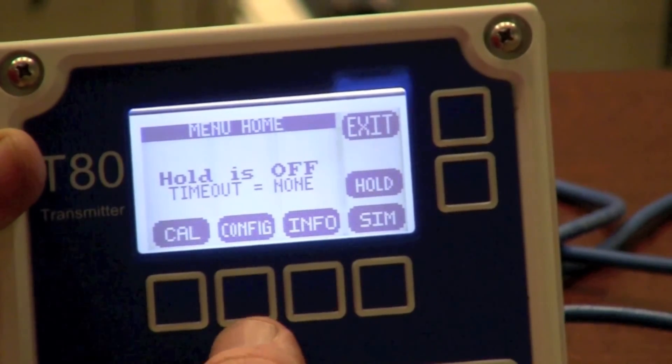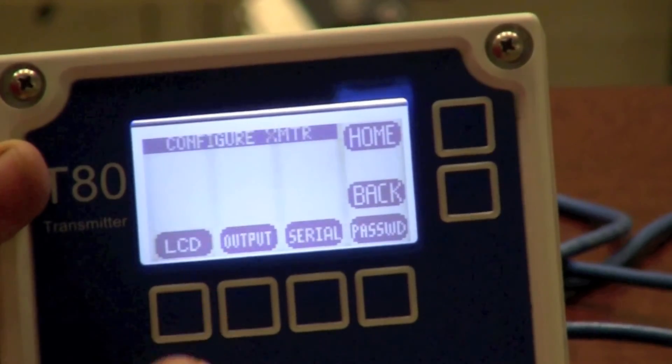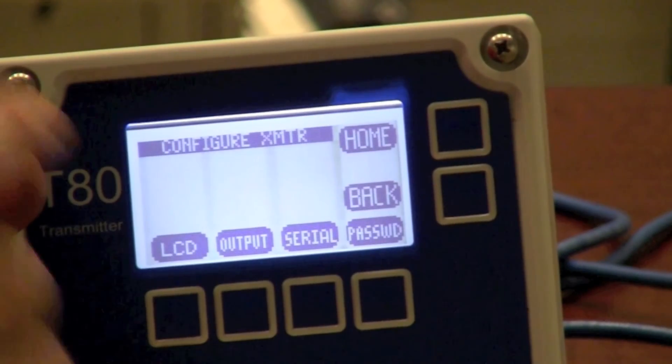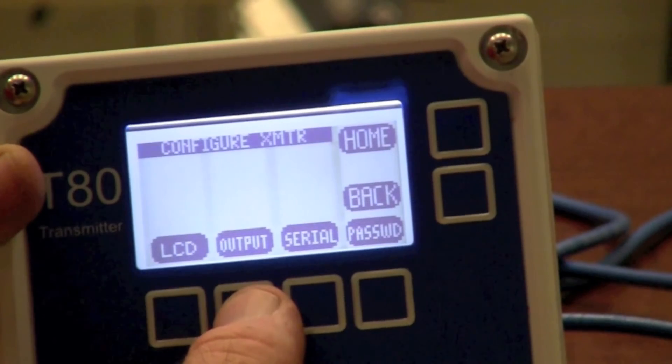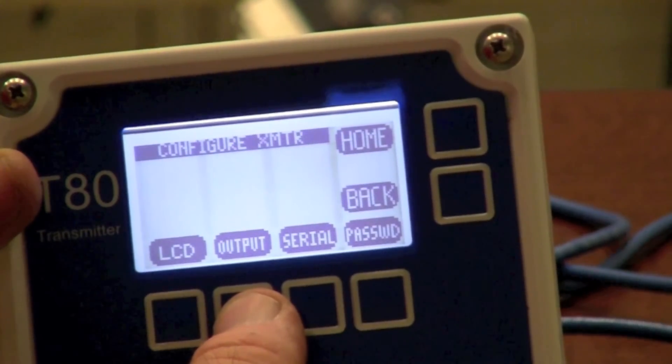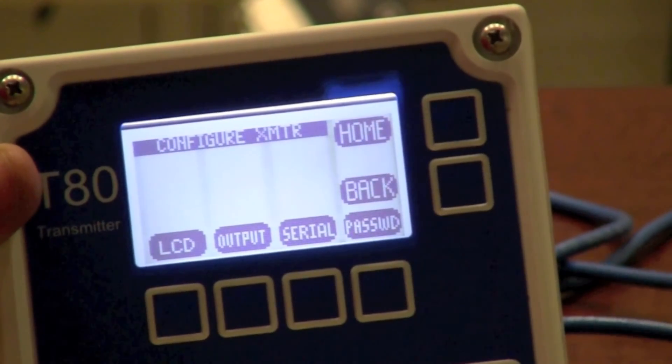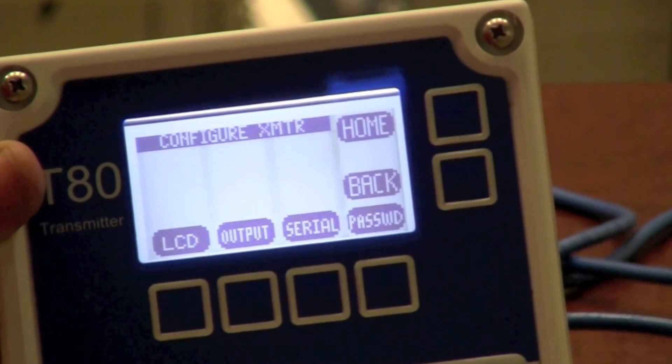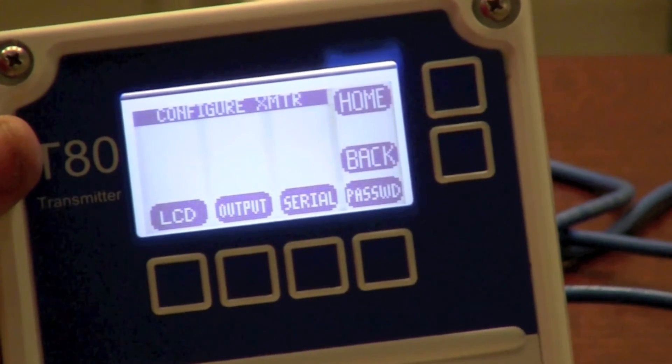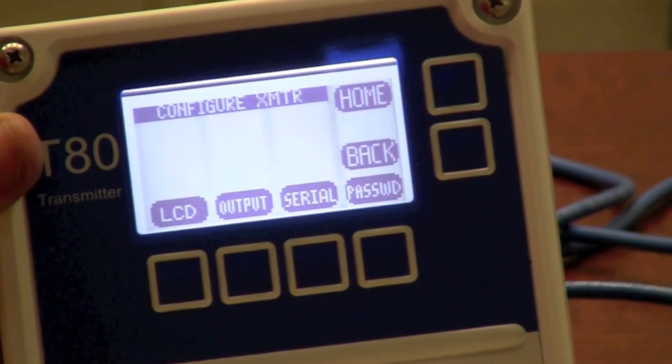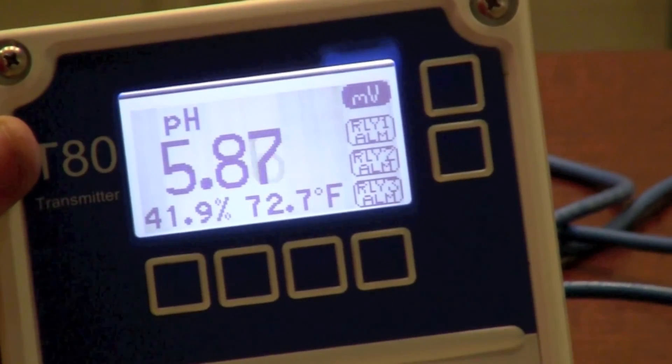Another nice feature is the ability of configuring the transmitter. I can adjust the LCD display. I can adjust the output so that I get the 4 to 20 over the desired range. I can also adjust the serial settings. This unit has a 4 to 20 milliamp output as standard. It has a second 4 to 20 milliamp output as an option. That second 4 to 20 milliamp can be assigned to temperature if a single probe is used. This unit is also available in a dual channel.